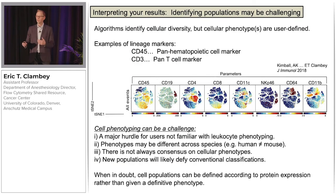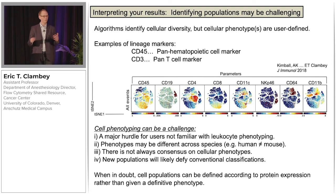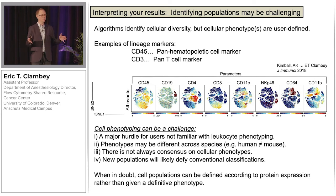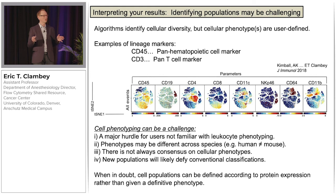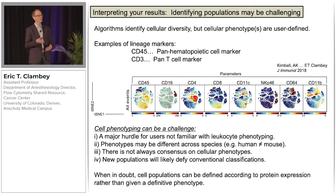The last challenge is identifying cell populations. For those comfortable with immunophenotyping this may seem easy, but there are many people who want to get into CyTOF analysis who are not well versed in the complexities of immunophenotyping. This presents a significant hurdle to new users, compounded by the fact that phenotypes are not always equivalent between mouse and human, and there's not even consensus among experts in terms of the best criteria to define cell types. And if you are fortunate enough to discover a new cell type, that by definition is going to defy conventional classification. I would encourage you to define cells based on protein expression or combinations of markers, and if you truly want to claim a hybrid cell type, you need complementary methods to make that conclusion.